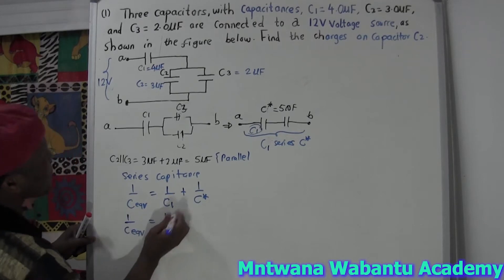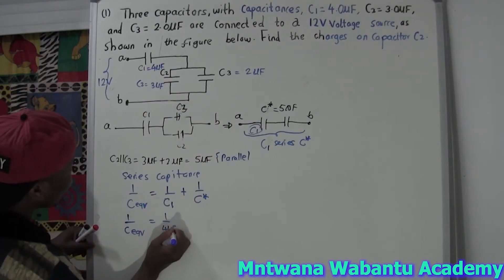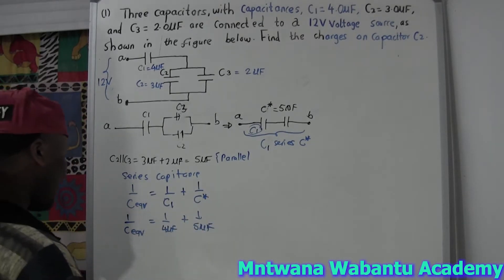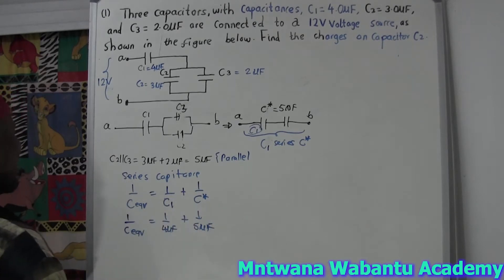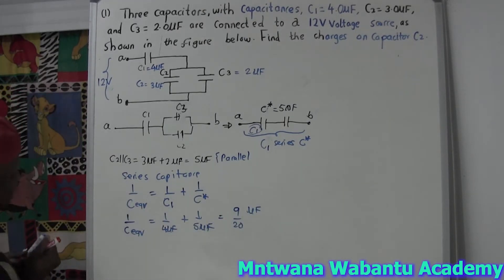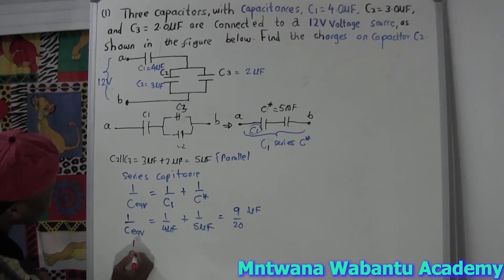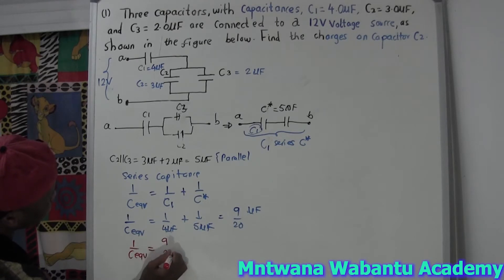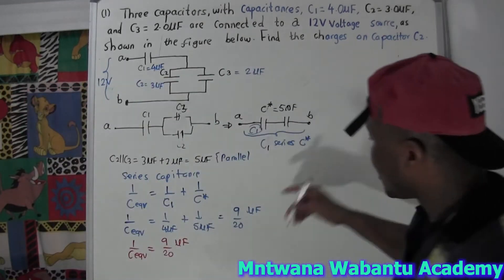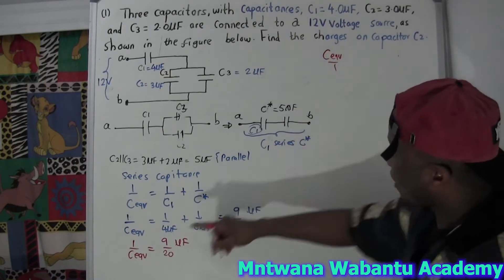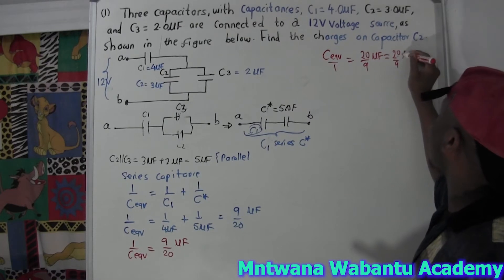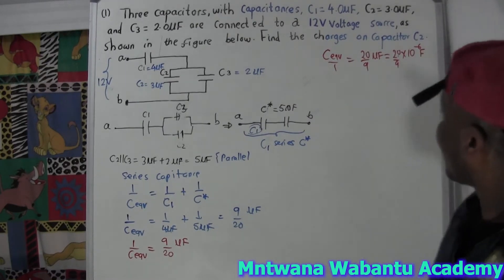So: 1/C_total = 1/C1 + 1/C* = 1/4 + 1/5. Calculating: 5/(4×5) + 4/(4×5) = 9/20. Therefore 1/C_equivalent = 9/20 microfarads. Flipping both sides gives C_equivalent = 20/9 microfarads.